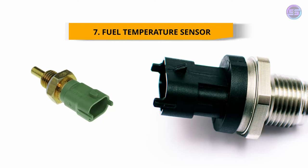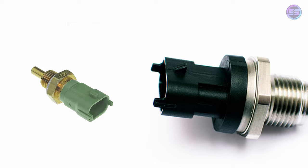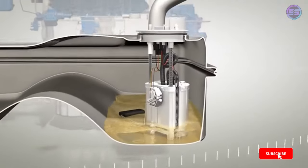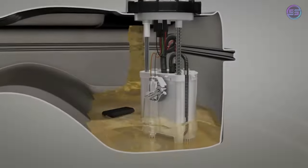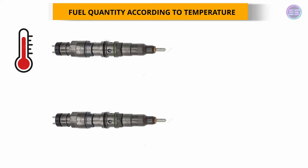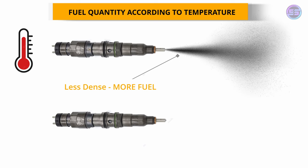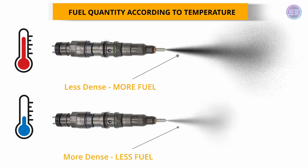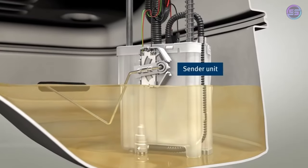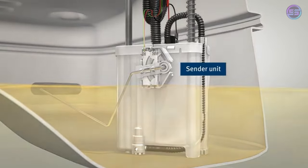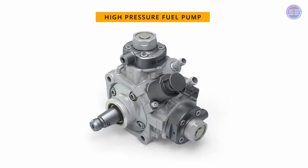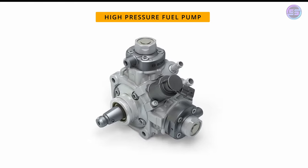Number seven, fuel temperature sensor. This measures the fuel's temperature and transmits the signal to the ECU. When the fuel is warm, it's less dense and burns more readily, so the ECU injects more fuel. When the fuel is cold, it's more dense, so the ECU injects less fuel. This optimizes the engine's performance. Some brands place this sensor on the sender unit which is located inside the fuel tank, or in some other brands it is located on the high pressure pump attached to the engine.